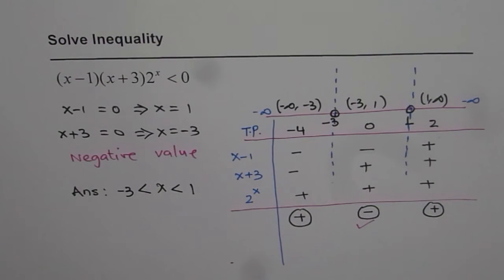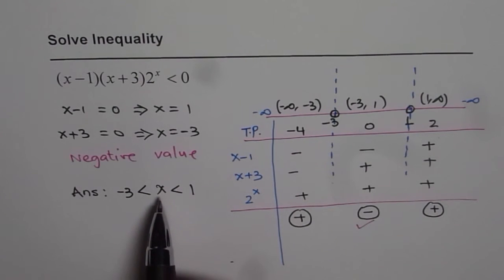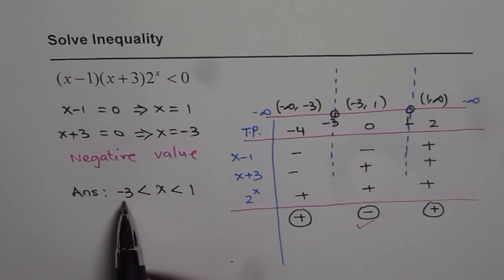I hope the solution and the steps are absolutely clear. So whenever you have factored form of inequality, it is better to find the zeros and then test for points on either side of the zeros and see what satisfies the inequality and then write down your answer. So the answer is that x is greater than minus 3 and less than 1.